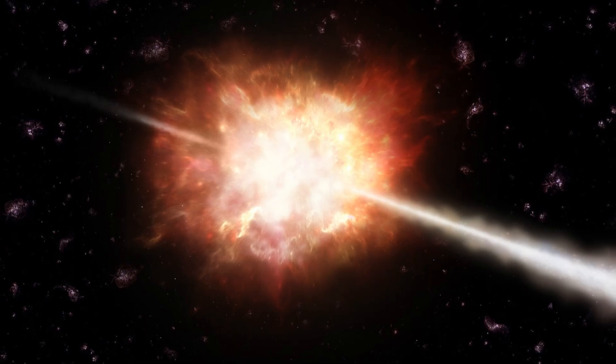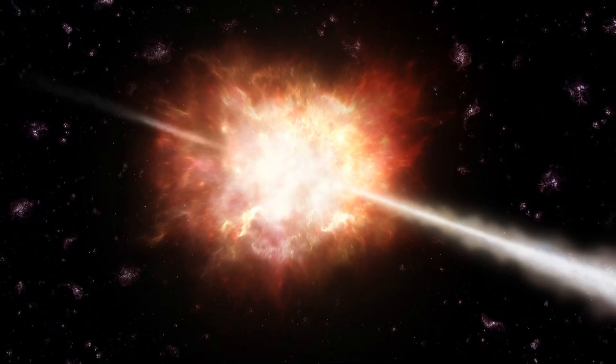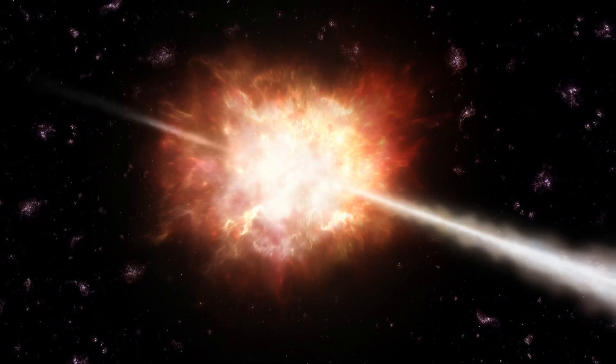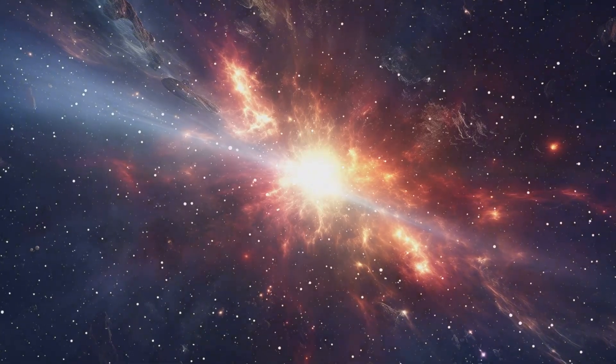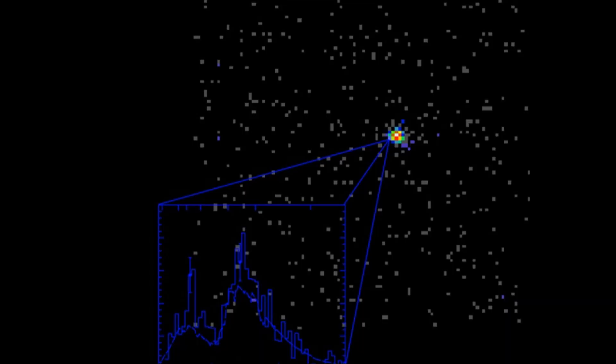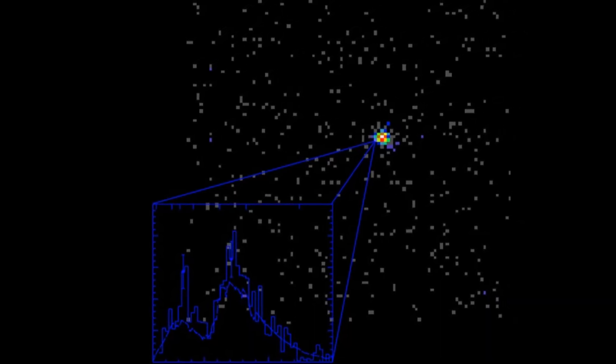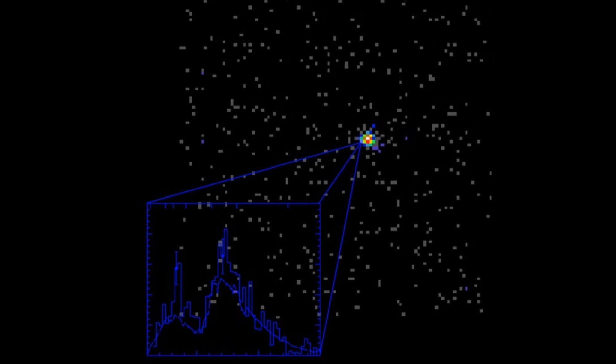SN 1998 BW was particularly notable because it was a highly energetic explosion that produced a jet of material moving at nearly the speed of light. This discovery helped establish the connection between hypernovae and long-duration gamma-ray bursts, two phenomena that were previously thought to be unrelated.